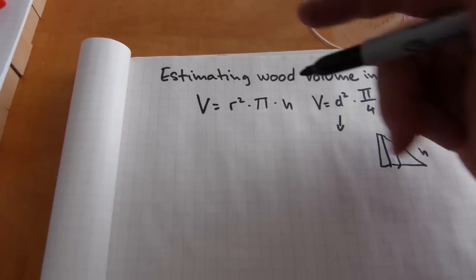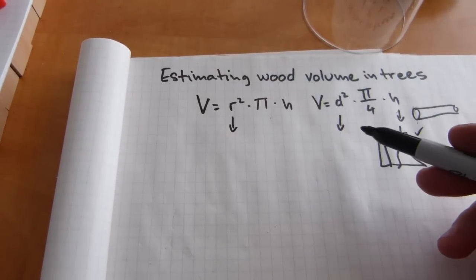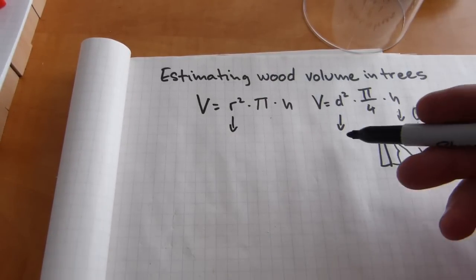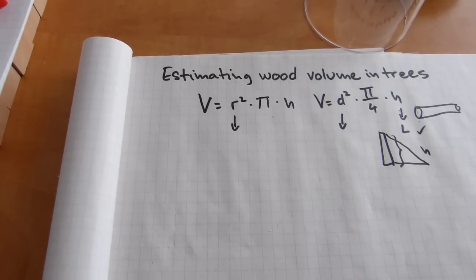Now, you need either diameter or you need radius. Once you have radius, you double it for diameter, or once you have diameter, you can split it in half to get radius, but there are a couple of issues with diameter.